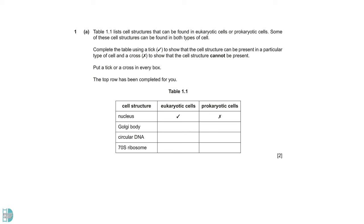Table 1.1 shows some cell structures. You are asked to complete the table by using tick and cross. First of all, remember to follow the instructions. You will not get full marks if you do not put crosses in the table. The Golgi body is a membranous organelle. Only eukaryotic cells have that. Circular DNA and 70S ribosomes are found in all prokaryotic cells. In eukaryotic cells, you can find them in the mitochondria and chloroplasts.